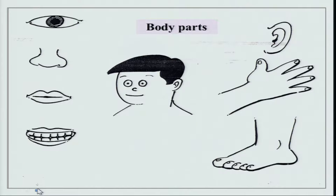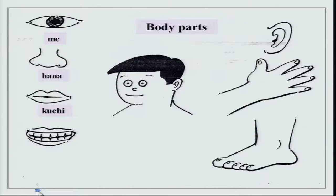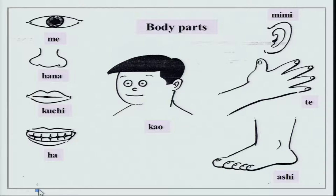We have done these body parts: me (eye), hana (nose), kuchi (mouth), ha (teeth), mimi (ear), te (hand), ashi (foot), kao (face) — and please, it is not c-o-w, it is kao. And of course this part over here — the head — is called atama. Please do not pronounce it as 'atma', it is a-ta-ma.